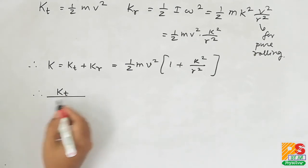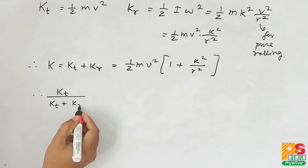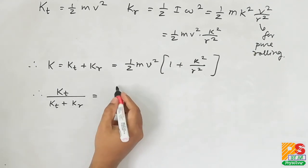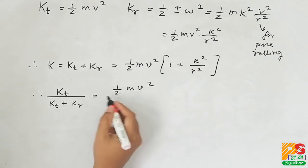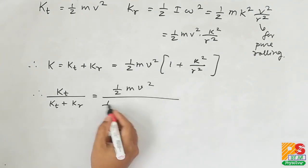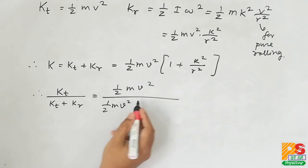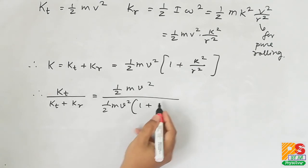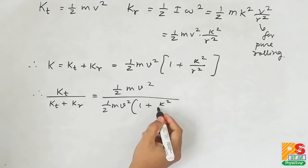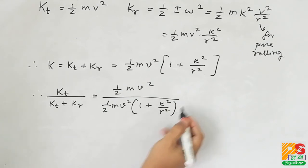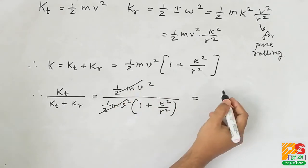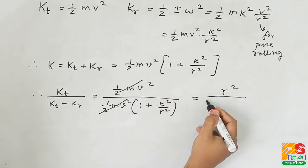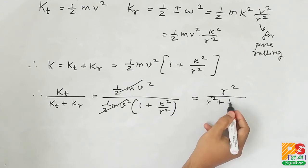Therefore, KT divided by total kinetic energy will be R square divided by R square plus k square.